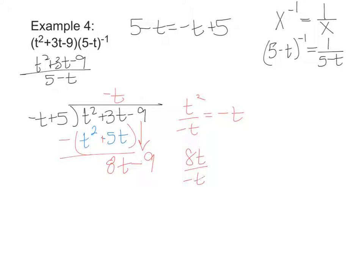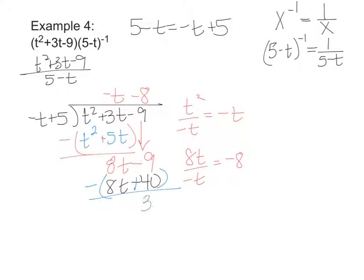8T divided by negative T is equal to negative 8, so I put minus 8 on top and multiply. Negative 8 times negative T gives me positive 8T, and negative 8 times 5 gives me negative 40. I subtract the whole polynomial, so that changes to a positive 40. The 8T minus 8T is 0, and negative 9 plus 40 is a positive 31, which is my remainder. So my answer is negative T minus 8 plus 31 over negative T plus 5, or equivalently over 5 minus T.